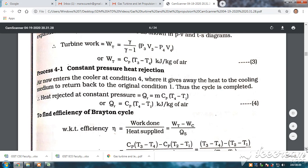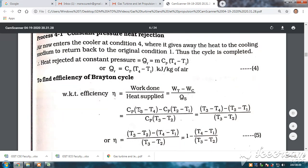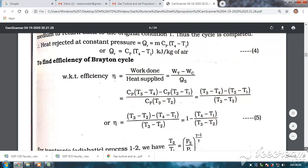Now, to find out the air standard efficiency again, efficiency is equal to work done divided by heat supplied. Work done is turbine work minus the compressor work divided by heat supplied. Substituting these values of turbine work, compressor work and the heat supplied, we will get this equation. We will simplify the equation.